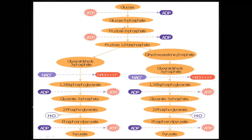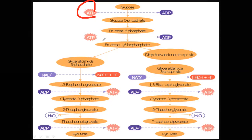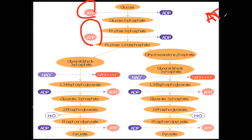We are concerned with the number of ATPs and the energy production in glycolysis. When glucose is converted to glucose 6-phosphate, 1 ATP is used. When fructose 6-phosphate is converted into fructose 1,6-bisphosphate, another ATP is used. So two ATPs are used in the early steps of glycolysis.